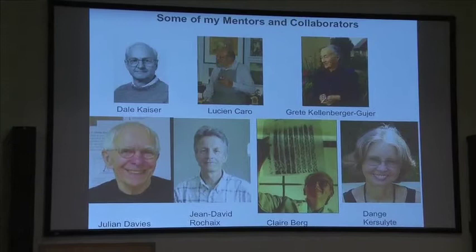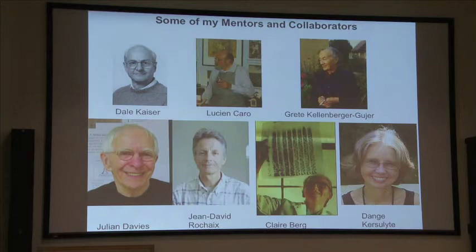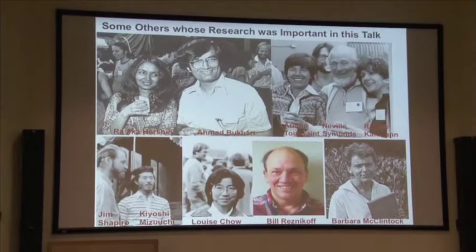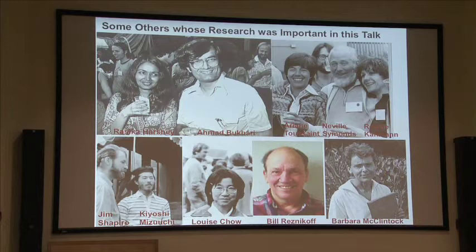It's been great fun. Some of my mentors and collaborators: Dale Kaiser, with whom I learned a lot about lambda; Lucien Carreau and Gret Kellenberger, with whom I worked very closely in Geneva; Julian, whose favorite R-factor plasmids turned out to be the source of TN5; Jean-David Rocher; my late sister Claire Berg, with whom I collaborated a lot; and Danga Kershelita, who found IS605. Among the mu workers pictured here, Ahmad Bukhari was one of the great spirits of the mu world — a tremendous enthusiast for all transposable elements and a great model for our work. He died tragically of cardiovascular failure at age 40. Jim Shapiro developed the model; Louise Chow did some of the early electron microscope heteroduplex mapping; and Bill Reznikoff was one of the great heroes of TN5 biochemistry and molecular biology.